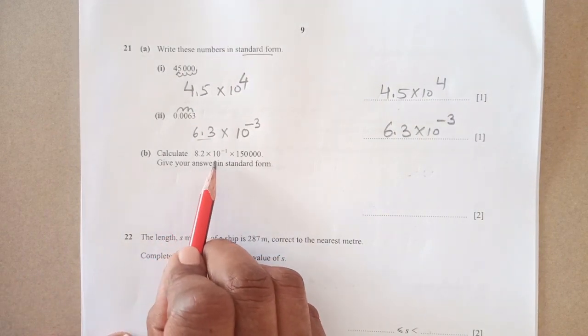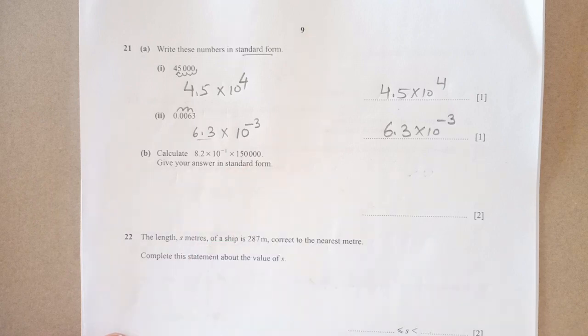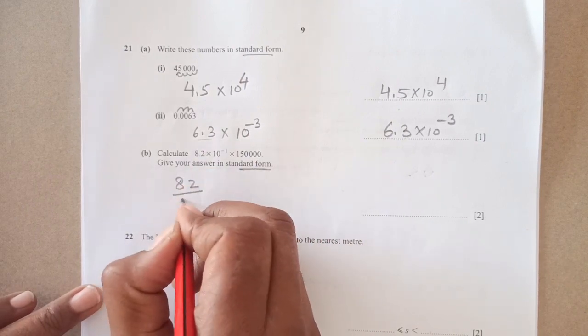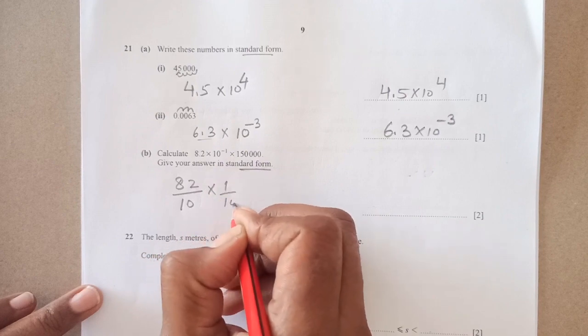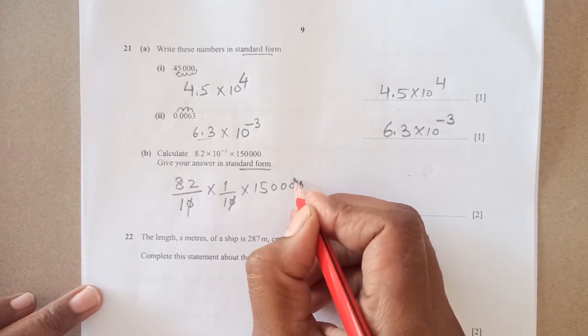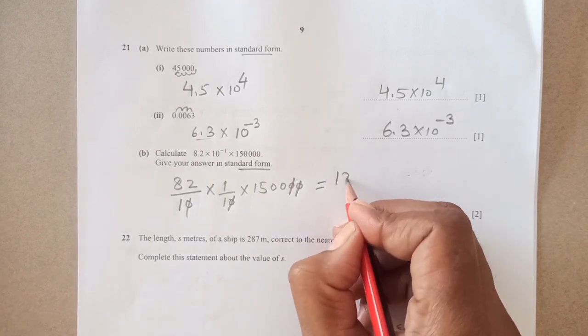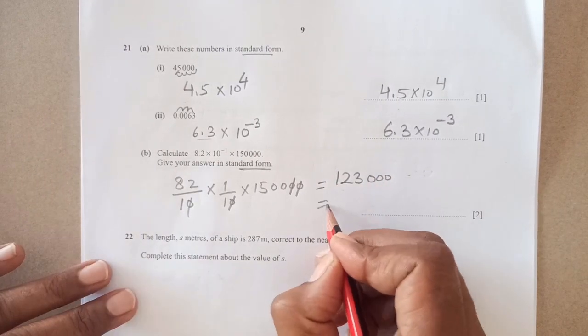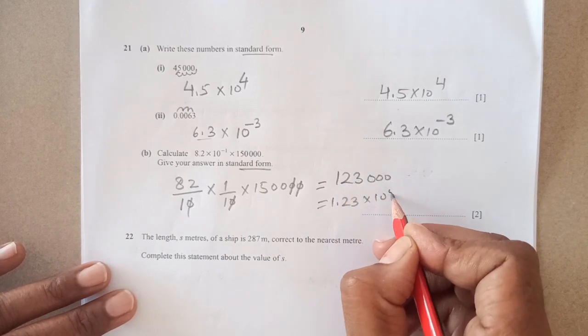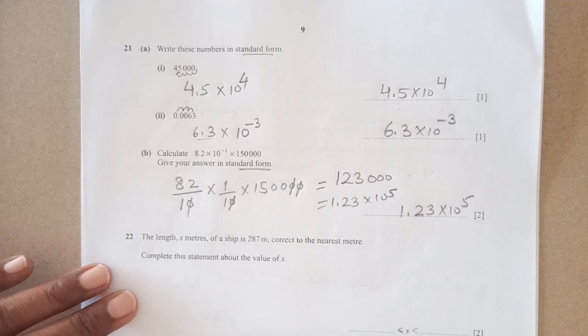Calculate 8.2 times 10 to minus 1 times 150,000. I can rewrite as 82 over 10 times 1 over 10 times 150,000. This is 15 times 10 to power 4. So we get 1230 times 10 to power 5. Final answer is 1.23 times 10 to power 5.